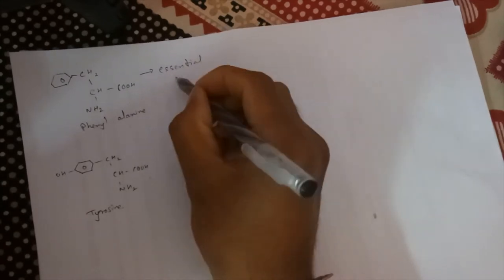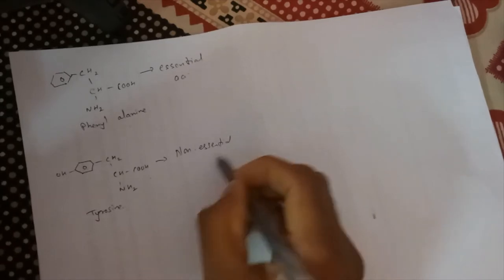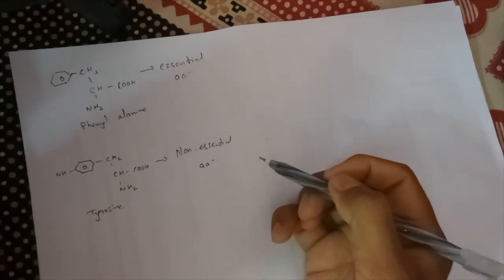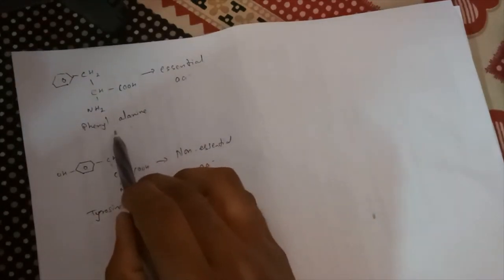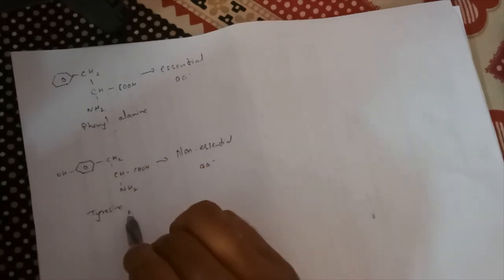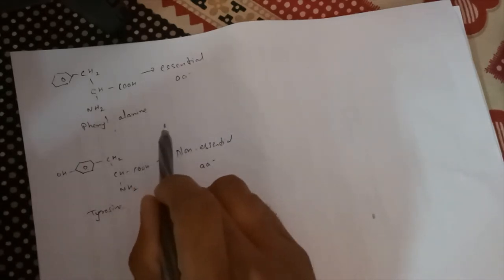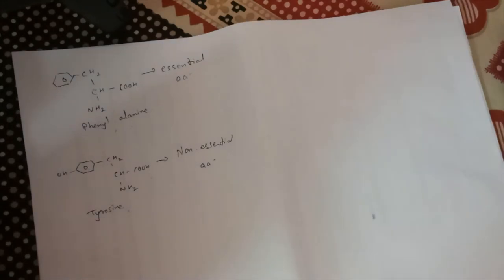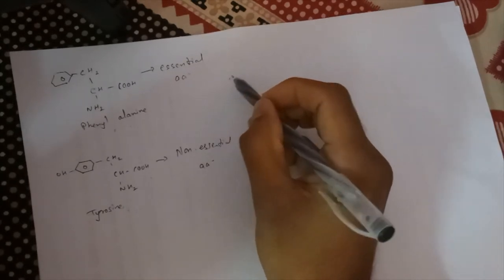Phenylalanine is an essential amino acid whereas tyrosine is a non-essential amino acid. In a protein, phenylalanine gets converted to tyrosine and shows its function — so basically phenylalanine's function is to get converted to tyrosine and then show its activity. For this reason it is also called the sparing action of tyrosine on phenylalanine.